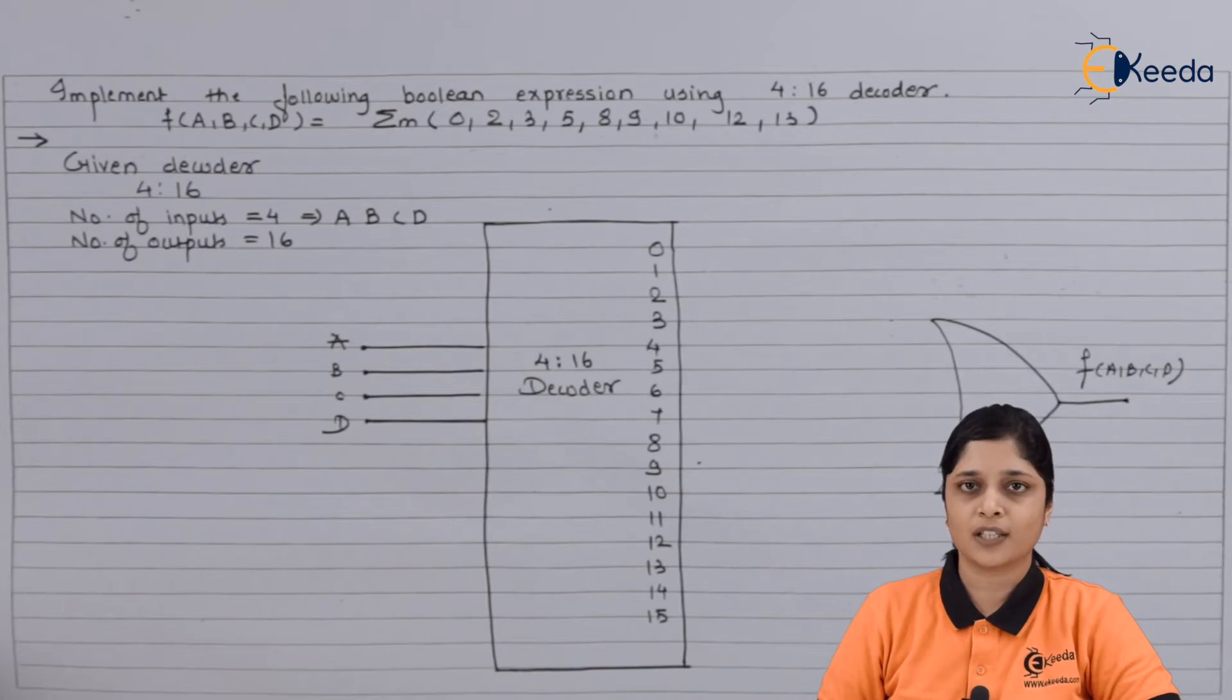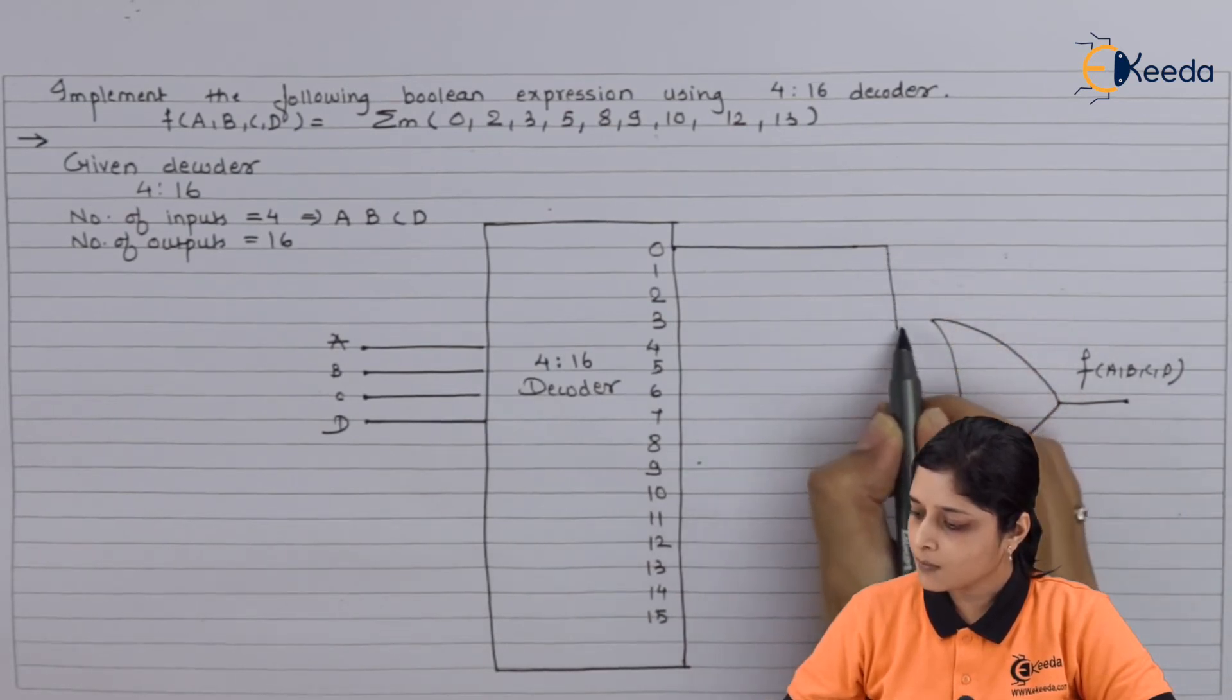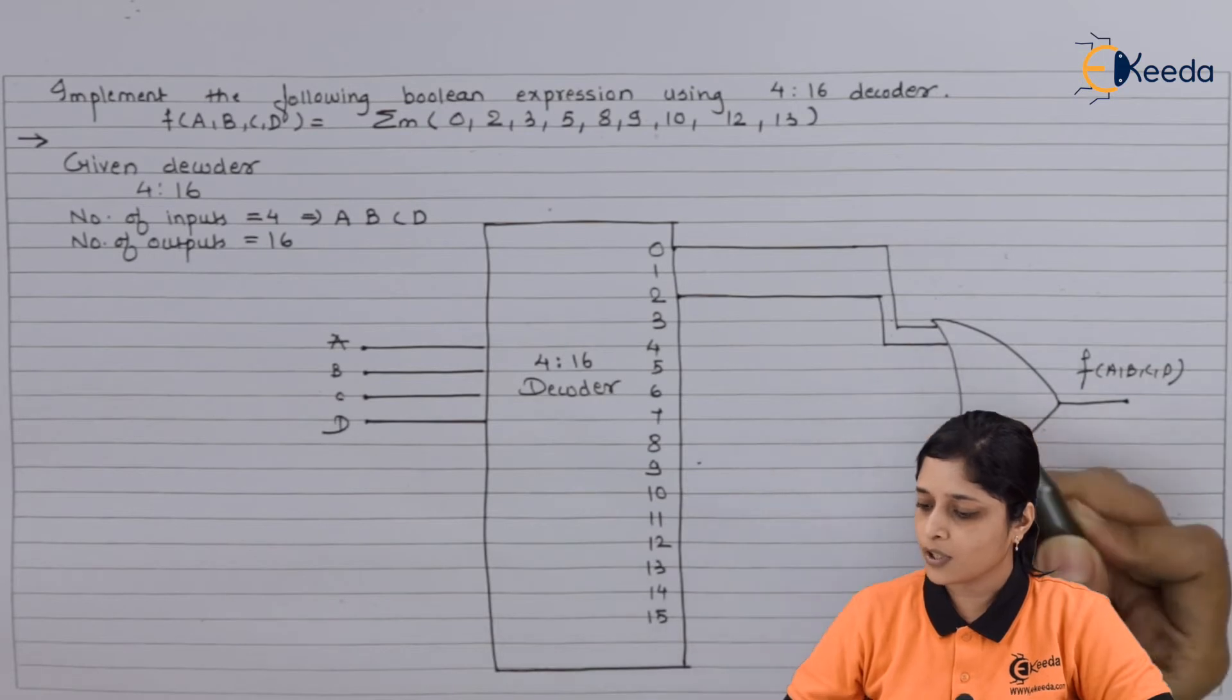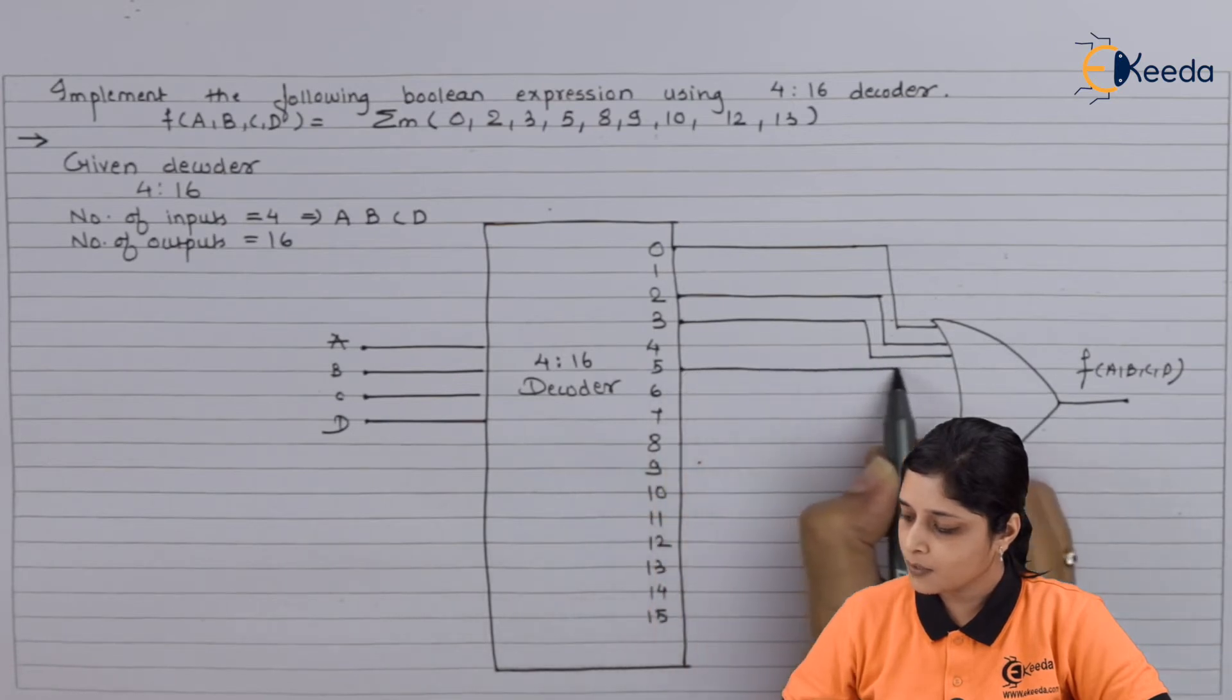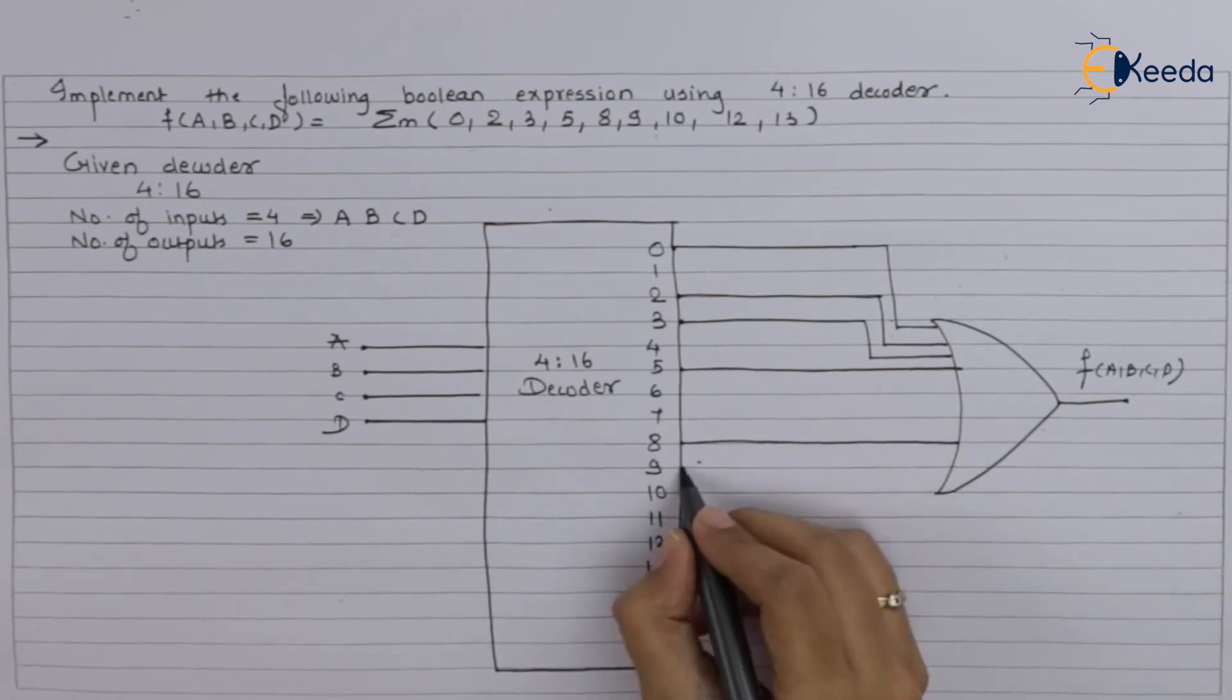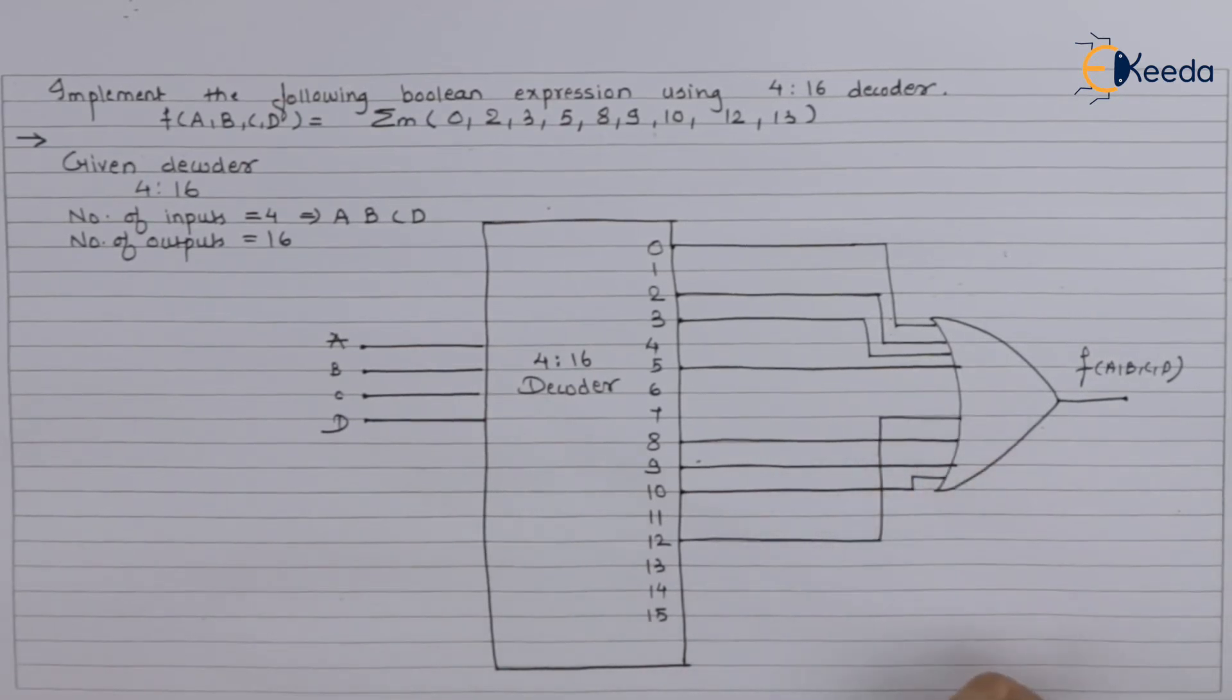So we will focus on zero, we will connect this zero to OR gate. Then two, take terminal two, connect it to the OR gate. Then take three outside, again you can connect here. After that we can come with the five, then you have eight. After that you have nine, then you can take 10 outside and make connections. Then you have 12, this way you can make the connections for 12, and then last you have 13.